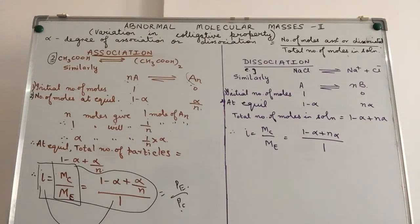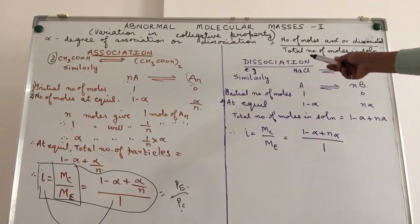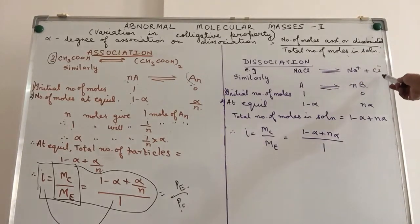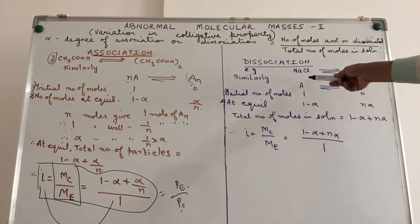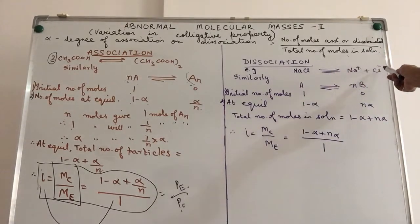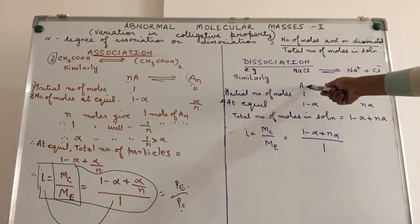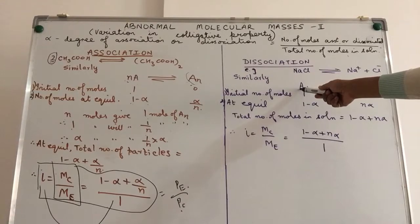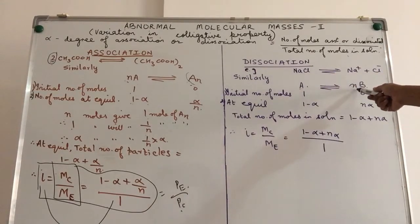Coming to dissociation, breaking down. For example, we had talked about NaCl breaking down to give you Na+ and Cl-. Now, here, one mole of NaCl is giving you two ions. In other words, one molecule is breaking down into two. We can have any generalization. So, in order to generalize it, we've said that A, a molecule A, is breaking down to give you n ions or n particles of B, C, D, E, whatever.